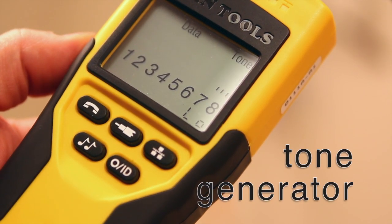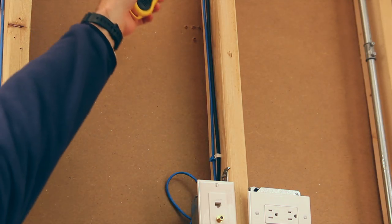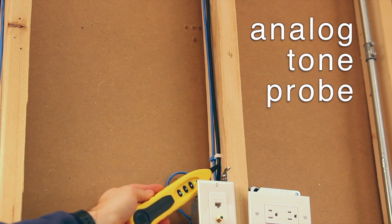The integrated tone generator is another useful tool to locate and identify wiring on the job. The tone generation feature requires the use of an analog probe such as the Klein Tools Probe Plus or the Klein Tools Trace All, both sold separately.